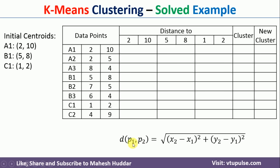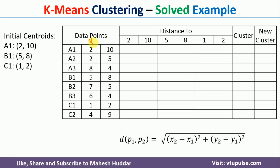The Euclidean distance between two points p1 and p2 is equal to the square root of (x2 minus x1) squared plus (y2 minus y1) squared. Let us assume this column is x1 and y1, and this one is x2 and y2. For data point a1, x1 is 2 and y1 is 10. So we get square root of (2 minus 2) squared plus (10 minus 10) squared, which equals 0.